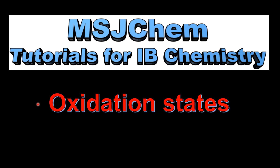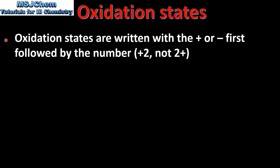This is MSJChem. In this video I'll be looking at oxidation states. Let's start with an important point: oxidation states are written with the plus or minus first, followed by the number — for example, plus 2, not 2 plus.